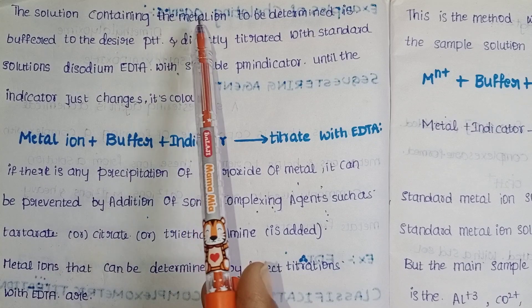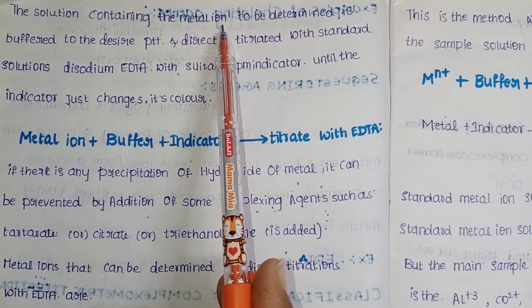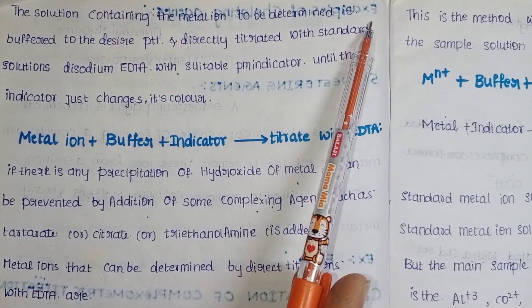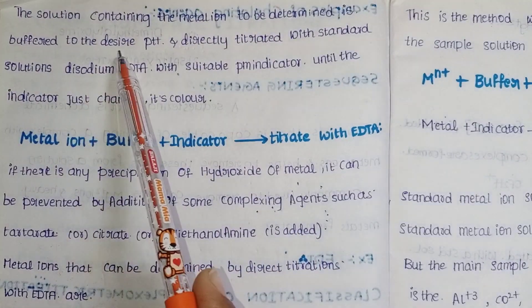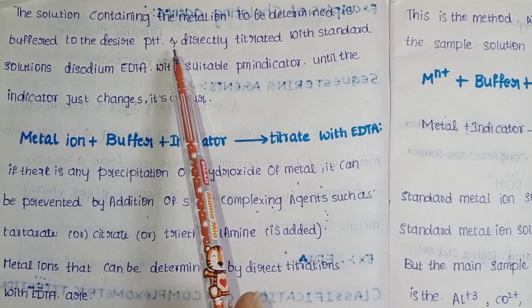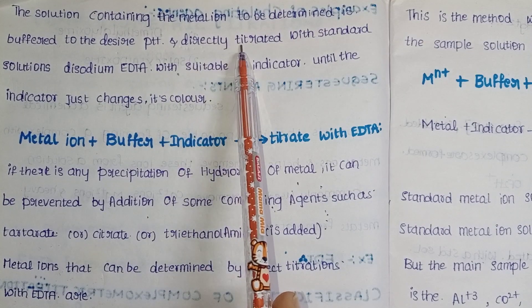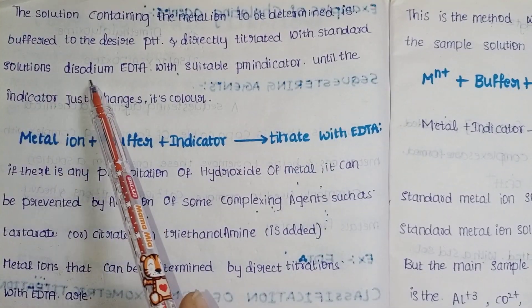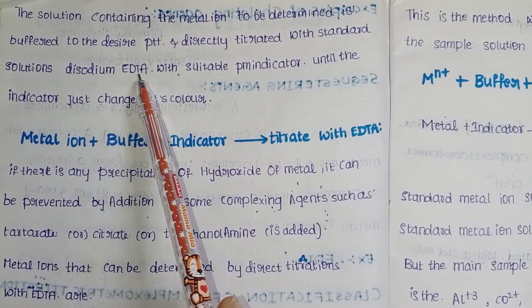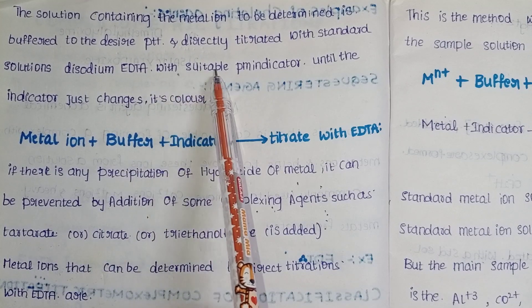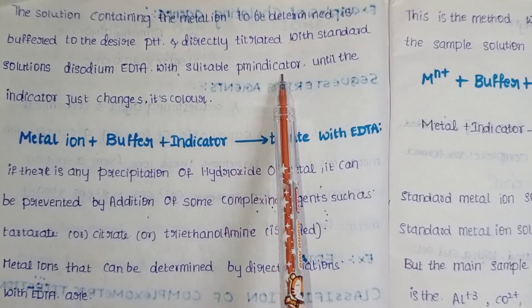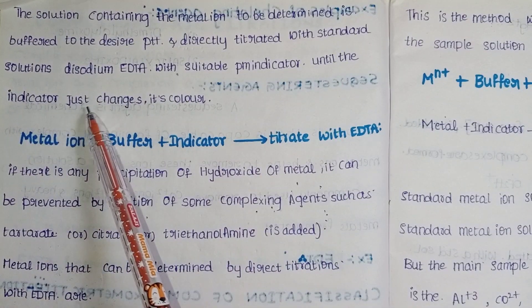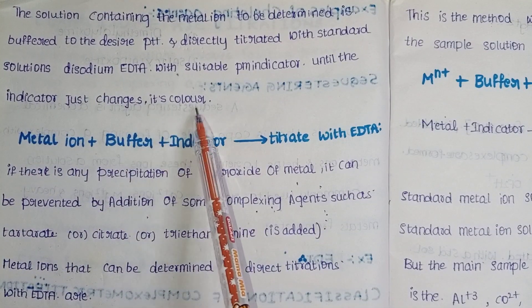The solution containing the metal ion to be determined is buffered to the desired pH and directly titrated with the standard solution of disodium EDTA with a suitable metal indicator until the indicator just changes its color.